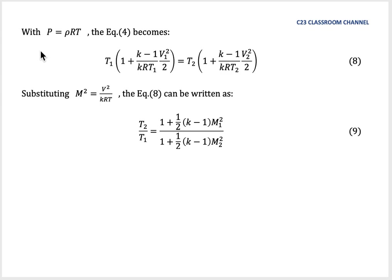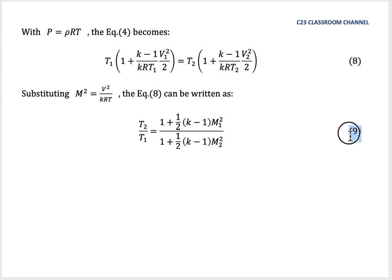From the ideal gas law, P = ρRT. Substituting into equation 4 and then substituting M² = V²/(KRT), equation 8 can be rewritten. This leads to equation 9, which you may already know from isentropic flow: T₂/T₁ = [1 + ½(K−1)M₁²] / [1 + ½(K−1)M₂²].